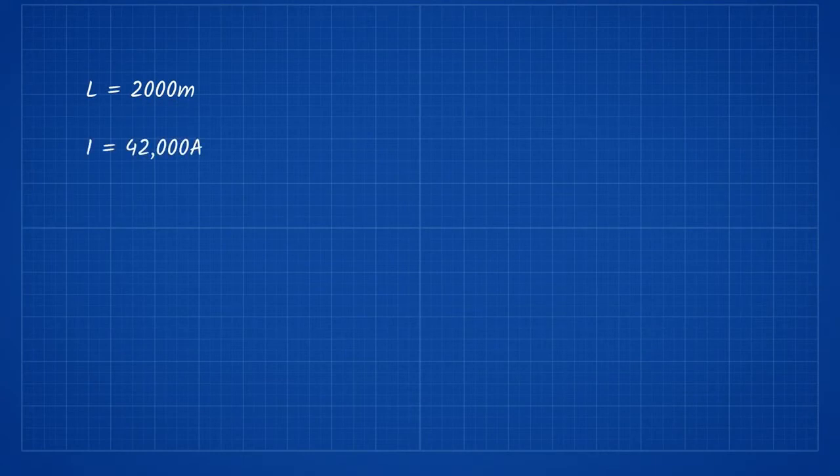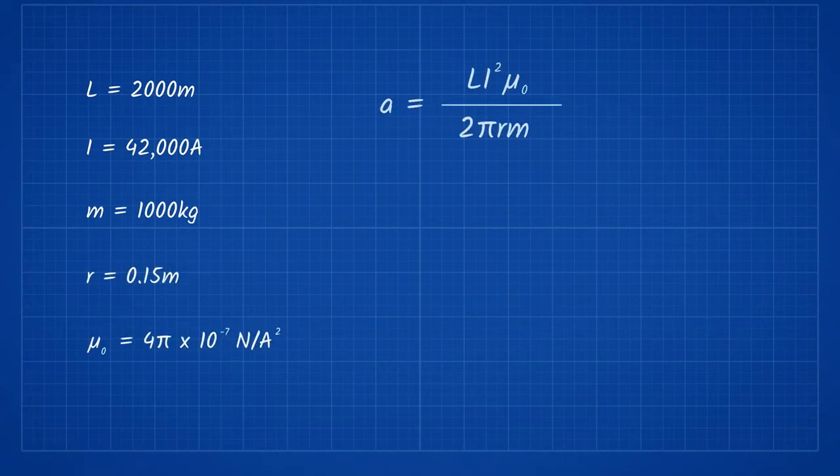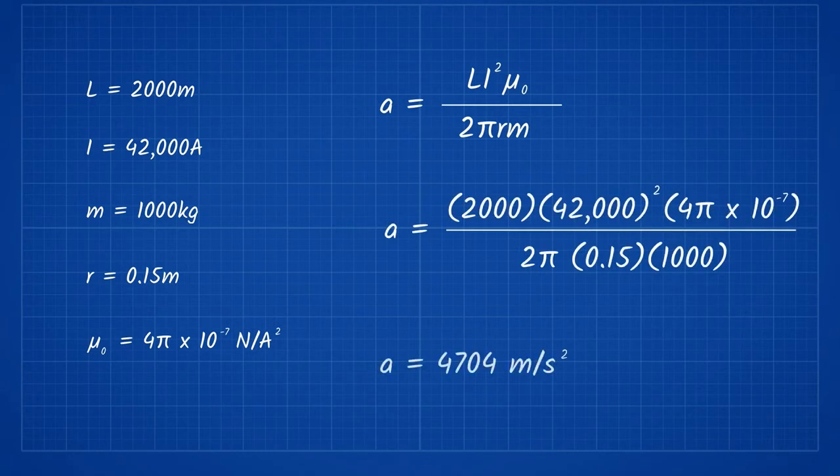We'll calculate for a length of 2 kilometers, a current of 42,000 amps, a mass of 1,000 kilograms, and a magnetic field radius of 0.5 meters. Putting that together results in an acceleration of 4,704 meters per second squared.